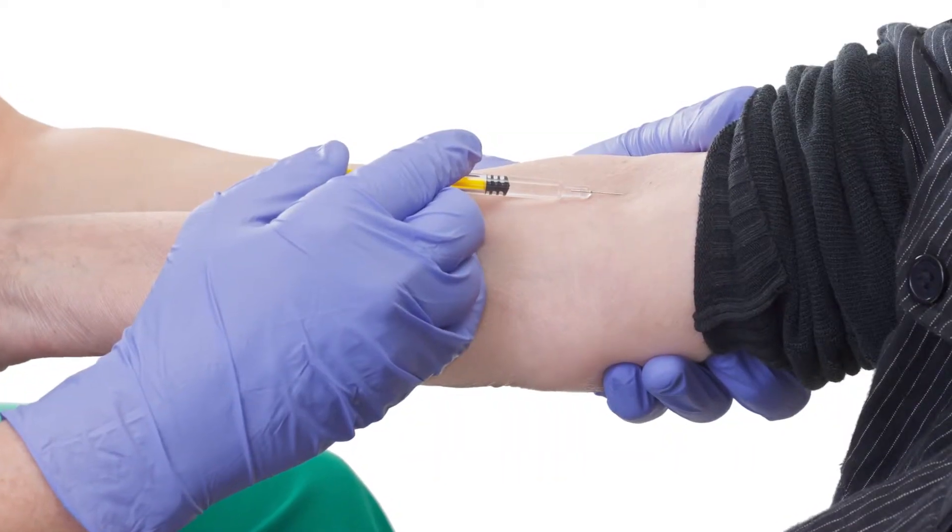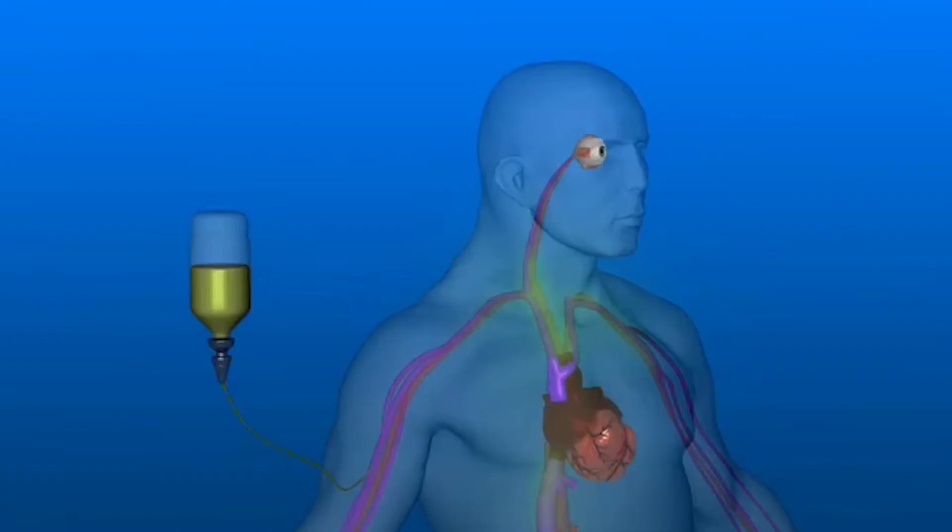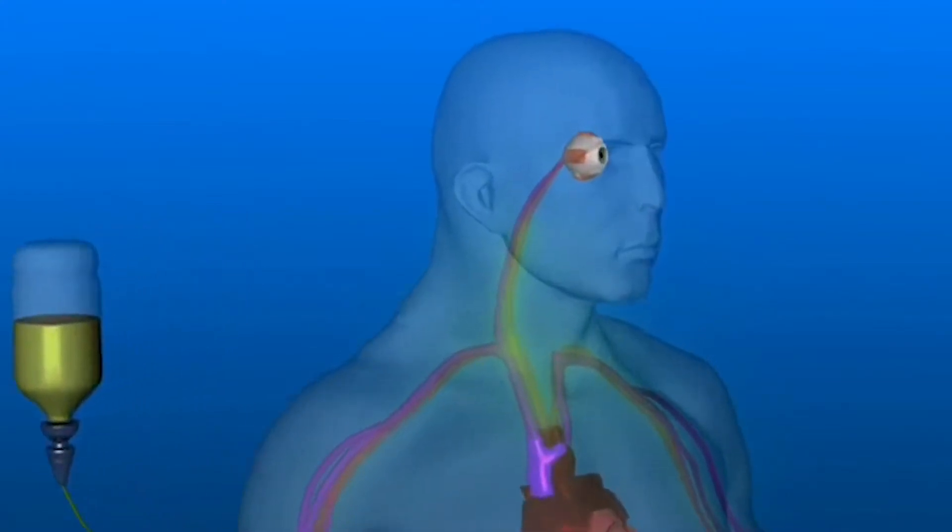Your doctor may also order a fluorescein angiogram to further evaluate your retina, or to guide laser treatment if it is necessary. This is a diagnostic procedure that uses a special camera to take a series of photographs of the retina after a small amount of yellow dye called fluorescein is injected into a vein in your arm.